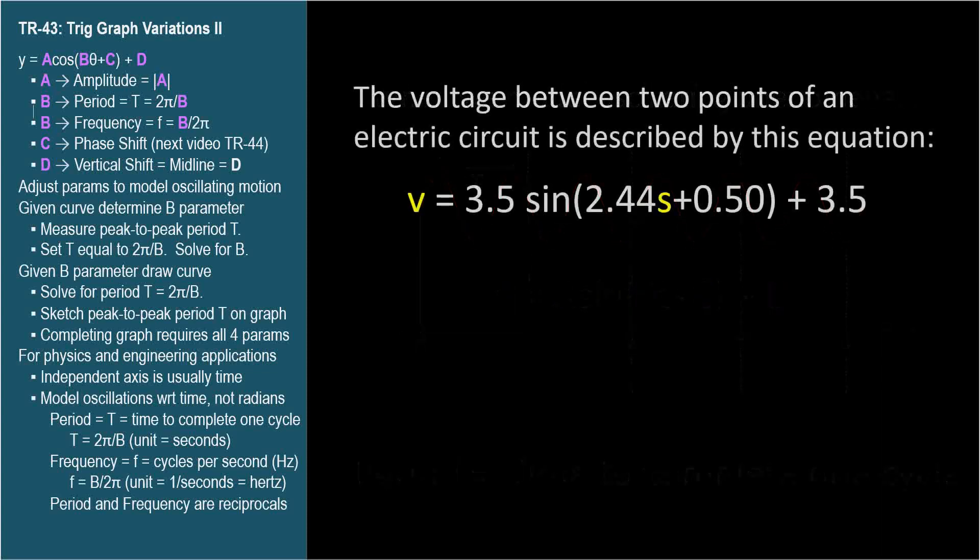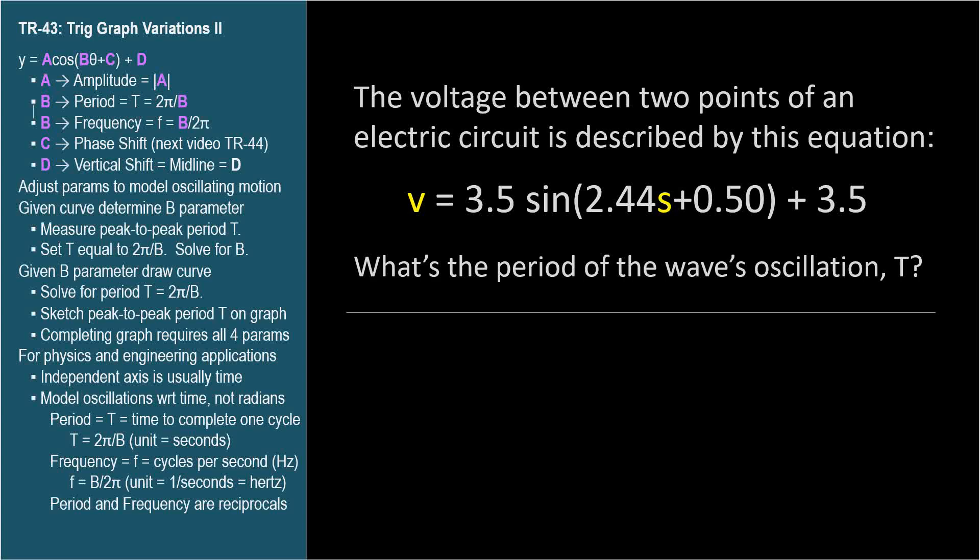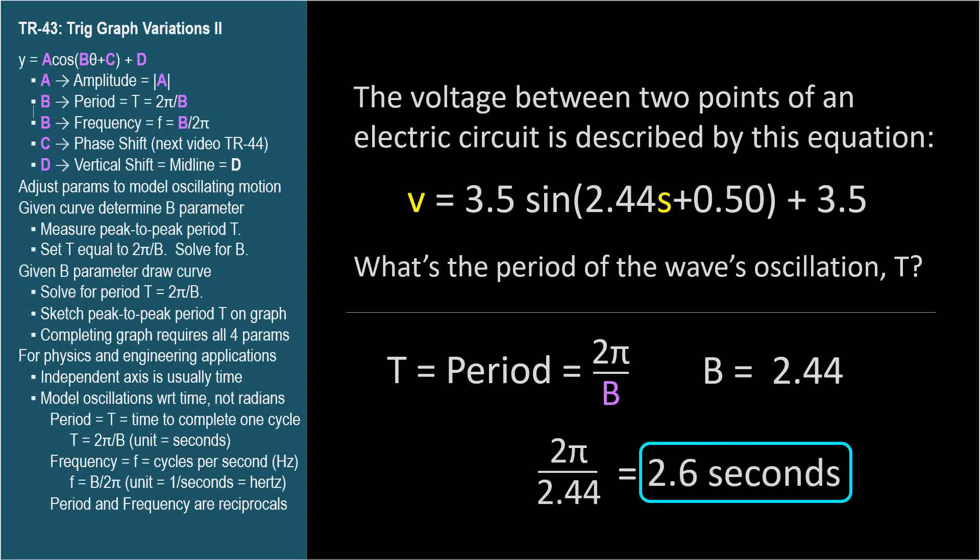Here's a simple problem dressed up to look complicated. The voltage between two points of an electric circuit is described by this equation, where s is in seconds. What's the period of the wave's oscillation, T? T the period is 2 pi over b. To solve this problem, all we need is the b parameter, which is 2.44. 2 pi over 2.44 equals 2.6 seconds, rounded to two significant figures, which is all we're given in the problem statement. So T the period equals 2.6 seconds.